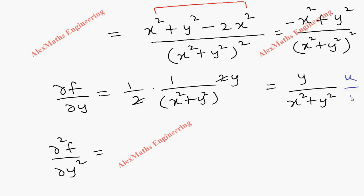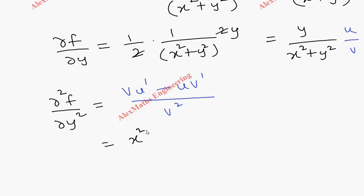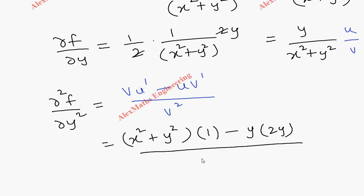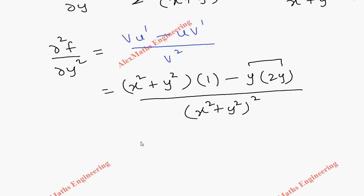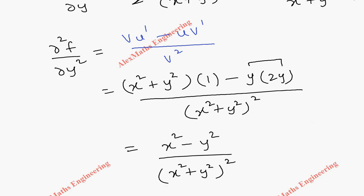Now we have to find the second order differentiation ∂²f/∂y². Let us follow the quotient rule u/v, where the formula is (v·u' − u·v') / v². Here v = x²+y², u' = 1 (differentiating y with respect to y), u = y, and v' = 2y, all divided by (x²+y²)². Multiplying out: x²+y² − 2y², and simplifying we get (x²−y²) / (x²+y²)².